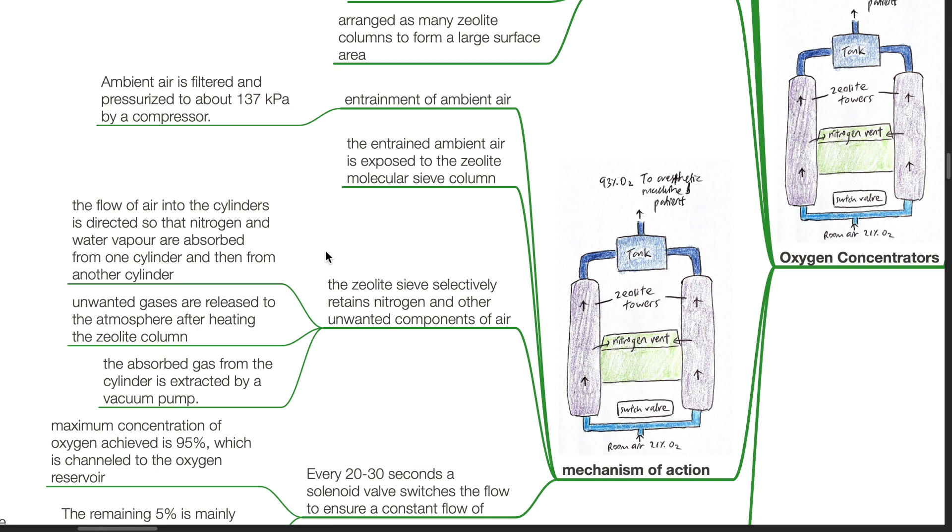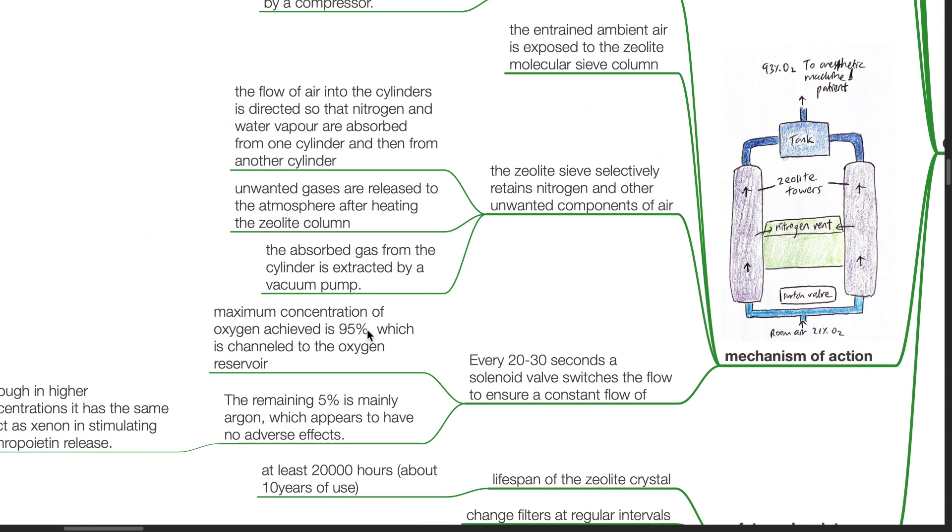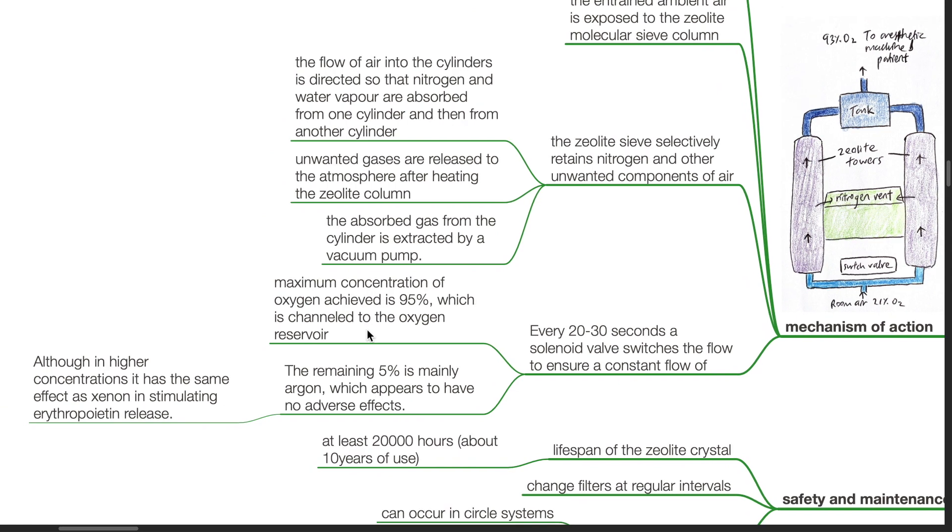Unwanted gases are released to the atmosphere after heating the zeolite column. The absorbed gas from the cylinder is extracted by a vacuum pump. Every 20 to 30 seconds a solenoid valve switches the flow to ensure a constant flow of maximum concentration of oxygen of 95%, which is channeled to the oxygen reservoir. The remaining 5% is mainly argon, which appears to have no adverse effects. Although in higher concentrations it has the same effect as xenon in stimulating erythropoietin release.